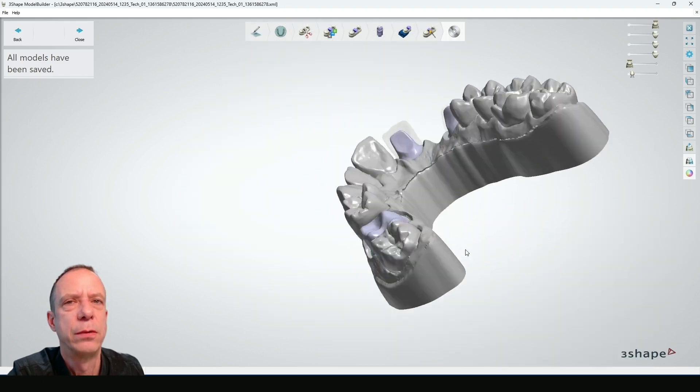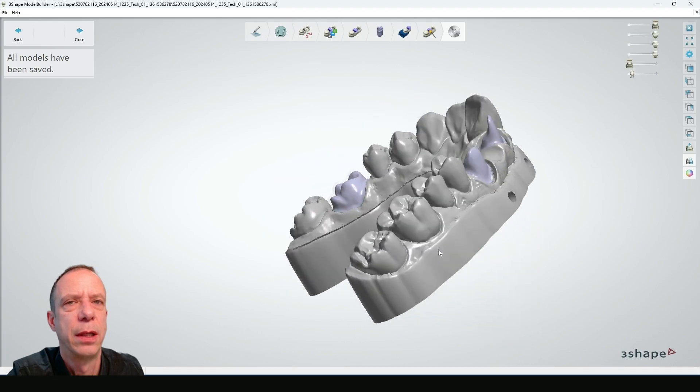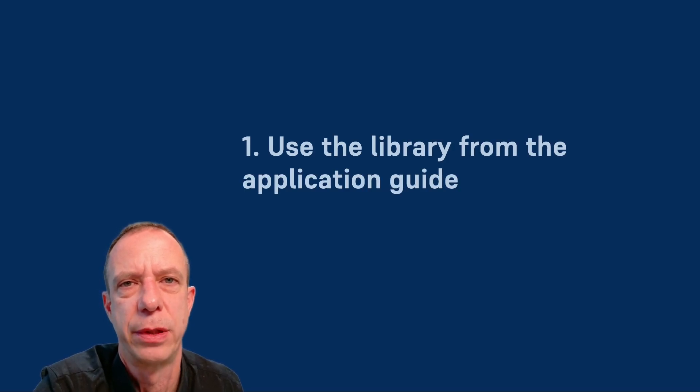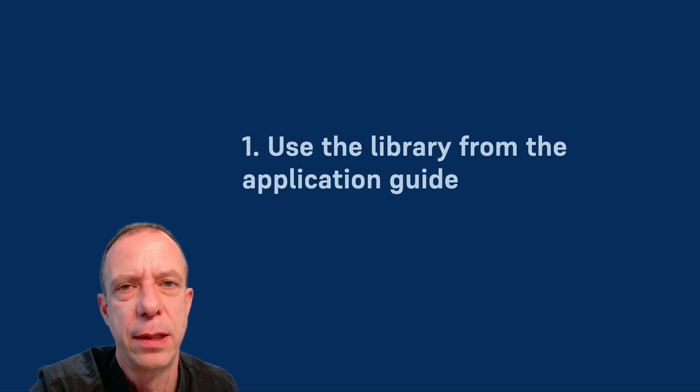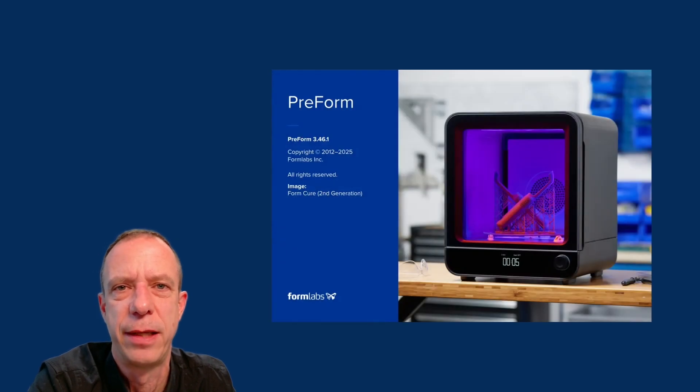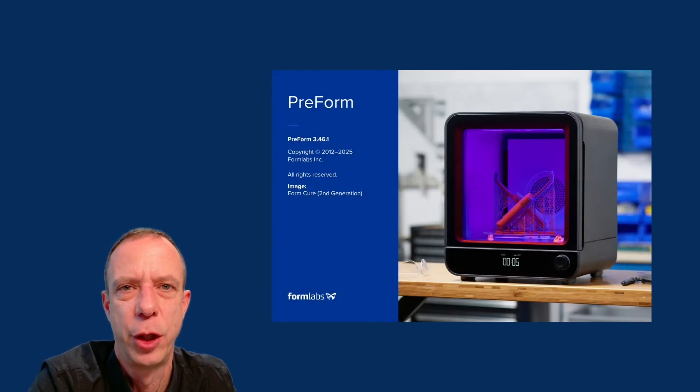That's all you need to know to properly use 3-Shape and our library. In this episode we saw how to use the 3-Shape system and properly design a removable dies model with our presets. One thing to remind you: you need to download the library from the application guide and properly install it, which is explained in episode 2. If you ever see dies that look different from what you expected, always double-check that you're using the right setting. Then we're all set and can proceed to the next episode, which covers how to properly set up the model you just designed in PreForm and make it ready for 3D printing. I hope to see you there — thank you.